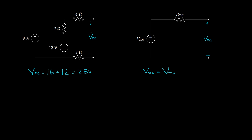For the other extreme situation, let's see what current flows through the two terminals if we connect them with a short circuit. We'll call that current ISC, or the short circuit current. To determine this current, I'll call this node ground, call the voltage at the other node VA, and use Kirchhoff's current law. Writing a nodal equation at this node, I have negative 8 amps, plus VA minus 12 divided by 2, plus VA divided by 7.